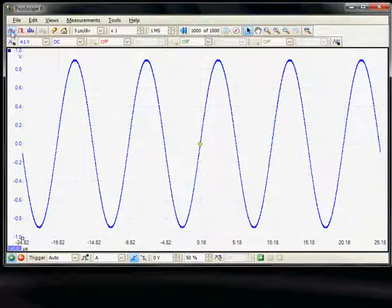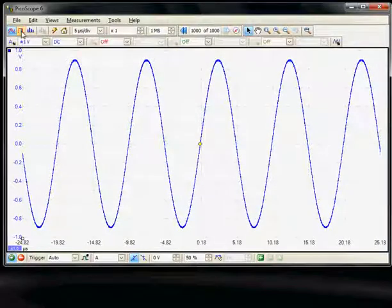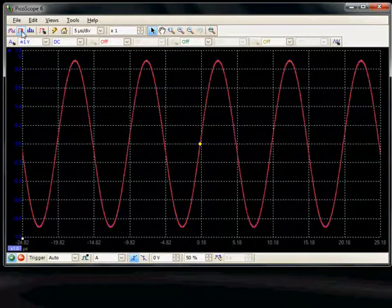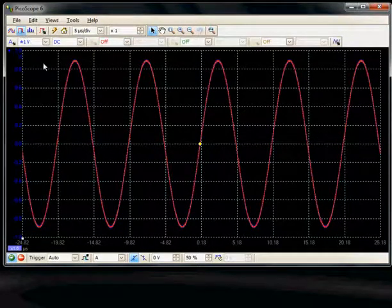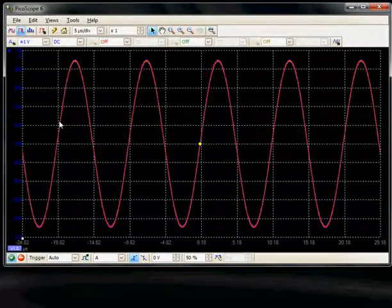Looking at the acquisition modes, the default one is the scope mode. The second one is persistence mode, which is a dedicated mode for very fast screen updates up to 10,000 waveforms per second. This is very useful for looking for random events on any particular captured data.